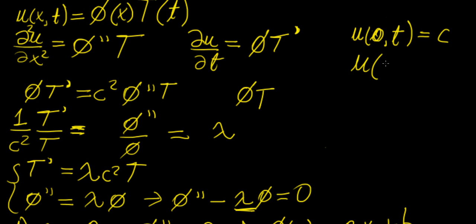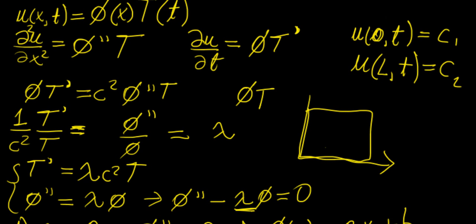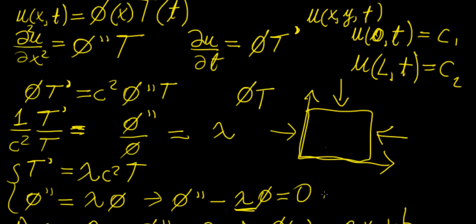Boundary conditions are always with respect to the space variables. For example, u(0, t) = c₁ for all t ≥ 0, and u(L, t) = c₂ for some fixed x = L. We need two boundary conditions because we have two spatial boundaries in the x-direction. If we had a two-dimensional space equation with variables x and y, we would need four boundary conditions. For three space variables, we'd need boundary conditions matching the number of dimensions involved.